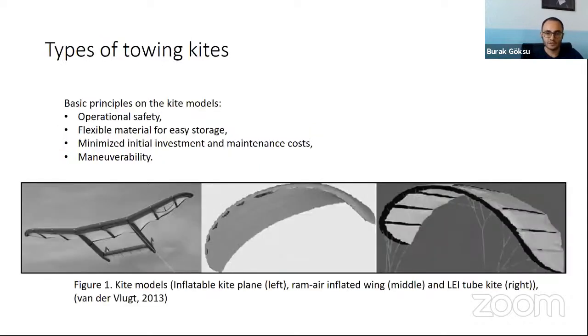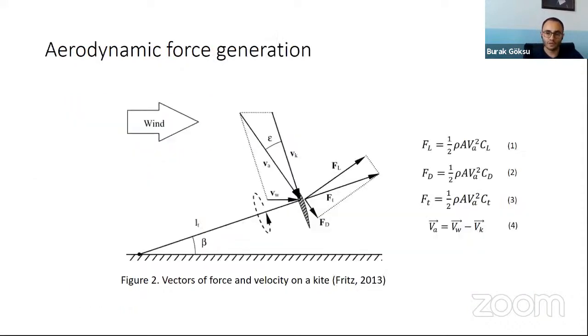The flexible kites are depicted in figure one. Operational safety is so important in maritime operations, so flexible canopies are preferred over the rigid wings. Due to the canopy's spanwise torsion, LEI kites - the C-shaped leading edge inflatable, the right one, and ram-air inflated wings, the middle one - are highly maneuverable ones. In comparison, inflatable kite plates, the left one, have a more rigid structure. Because of this feature, C-shaped ones are commonly used to prevent ship course deviation and to increase towing force.